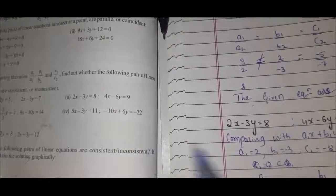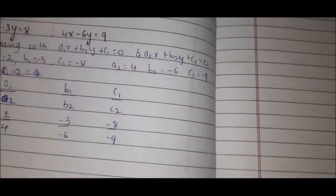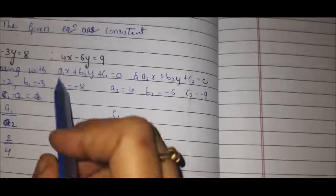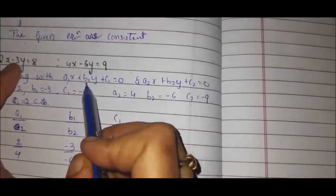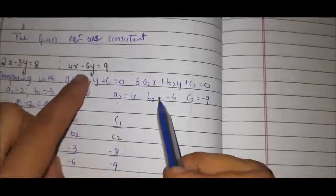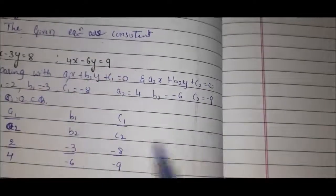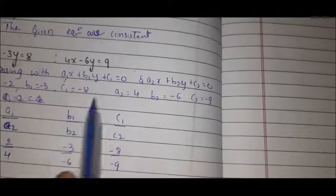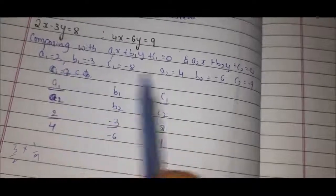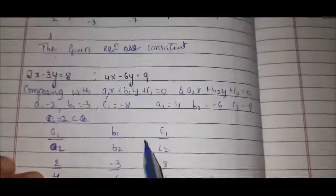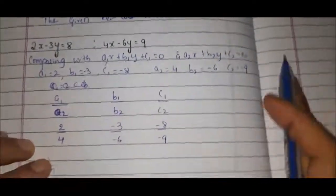Second question: 2x minus 3y equals 8, and 4x minus 6y equals 9. Comparing with the standard form: A1 is 2, B1 is minus 3, C1 is minus 8. And A2 is 4, B2 is minus 6, C2 is minus 9. The ratios are: A1 by A2 is 2 by 4, B1 by B2 is minus 3 by minus 6, and C1 by C2 is minus 8 by 9.